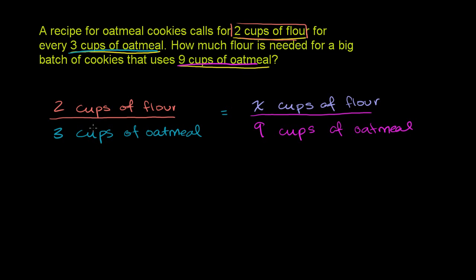Now, the easiest way to do this, we can just get rid of the cups of flour and the cups of oatmeal for now, and we can just view this as a simple proportion problem, where it's 2 over 3 is equal to x over 9. And the simplest way to solve this is to multiply both sides of this equation by 9.